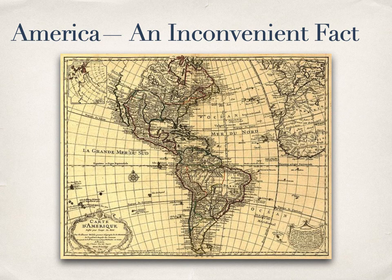The Italian cartographer and explorer Giovanni di Veranzano decided that America was only one mile wide. He had seen Pamlico Sound across a narrow natural causeway and decided that the sound itself must be the Pacific Ocean, and whatever he saw on the other side must be Asia. Well, it wasn't.